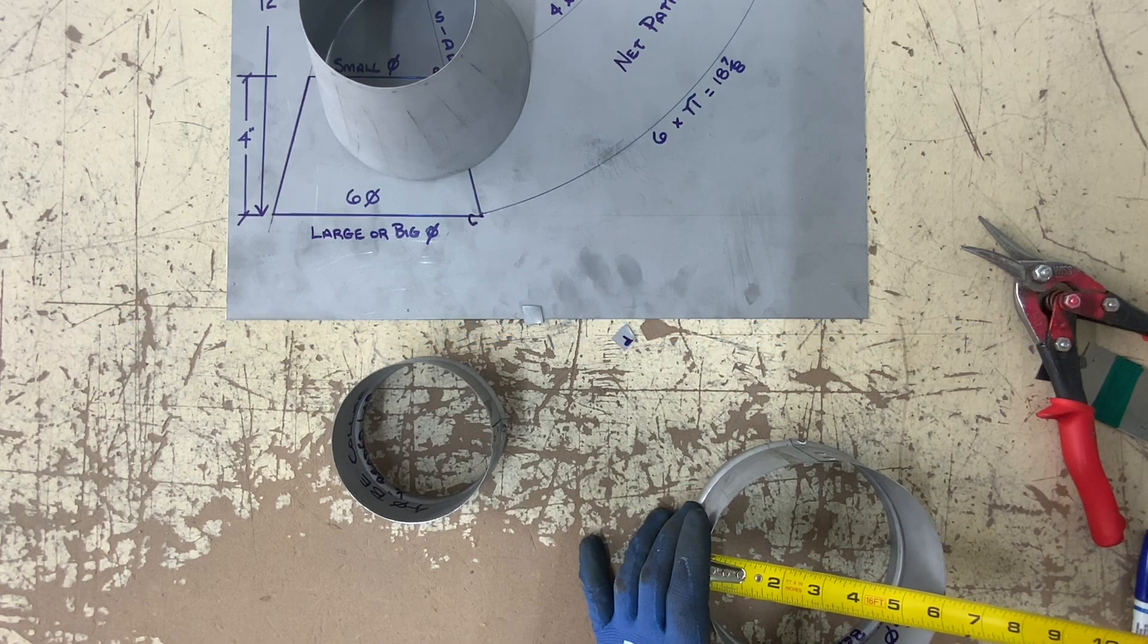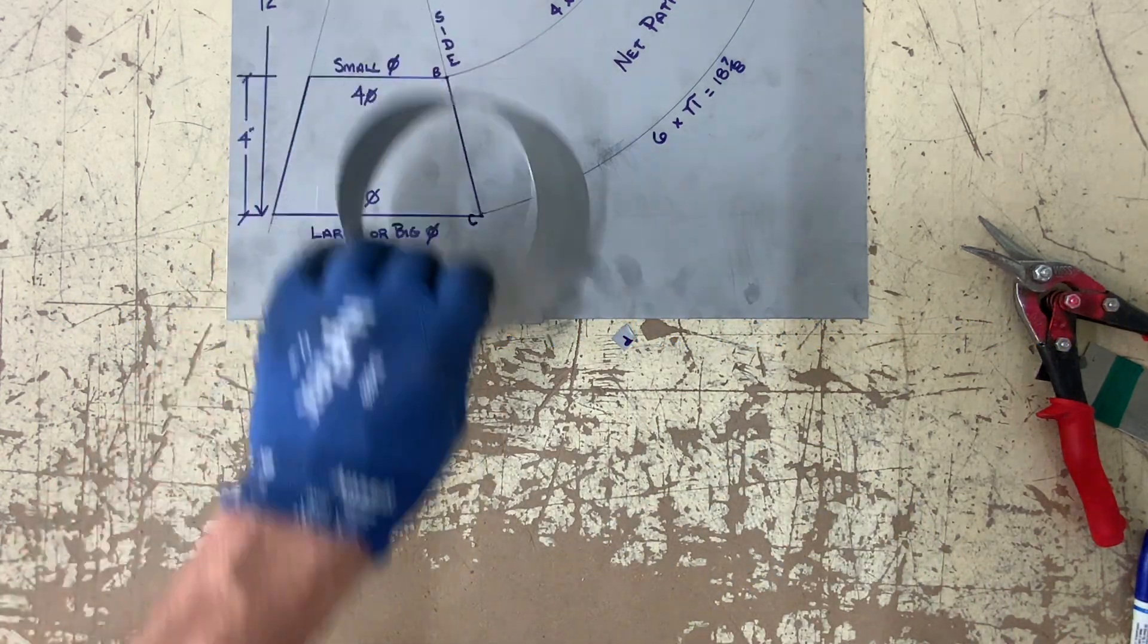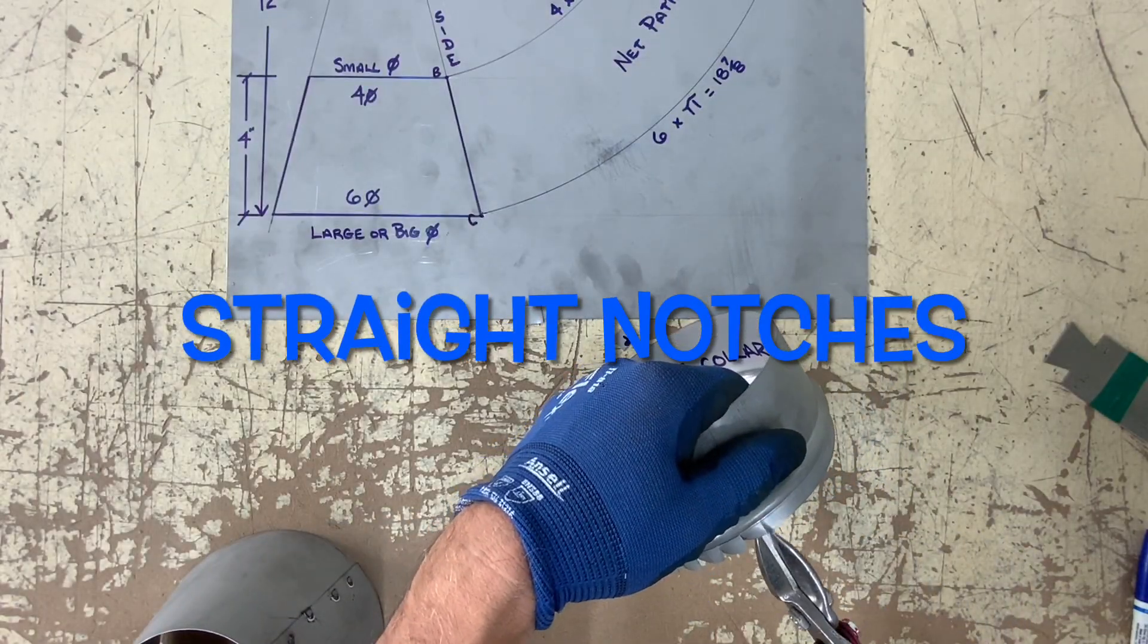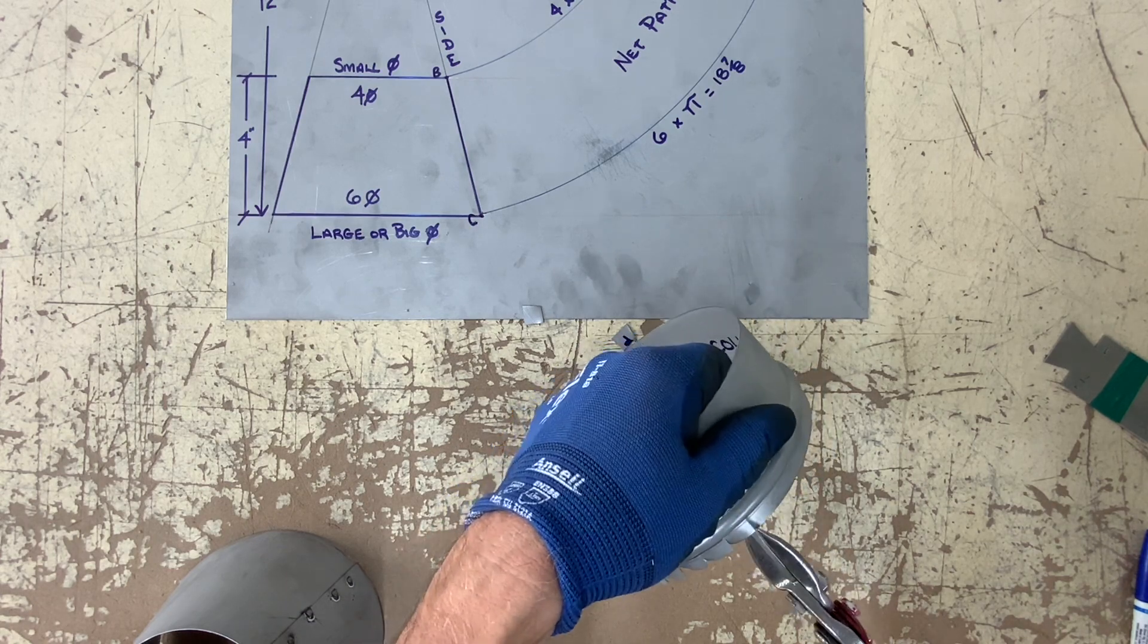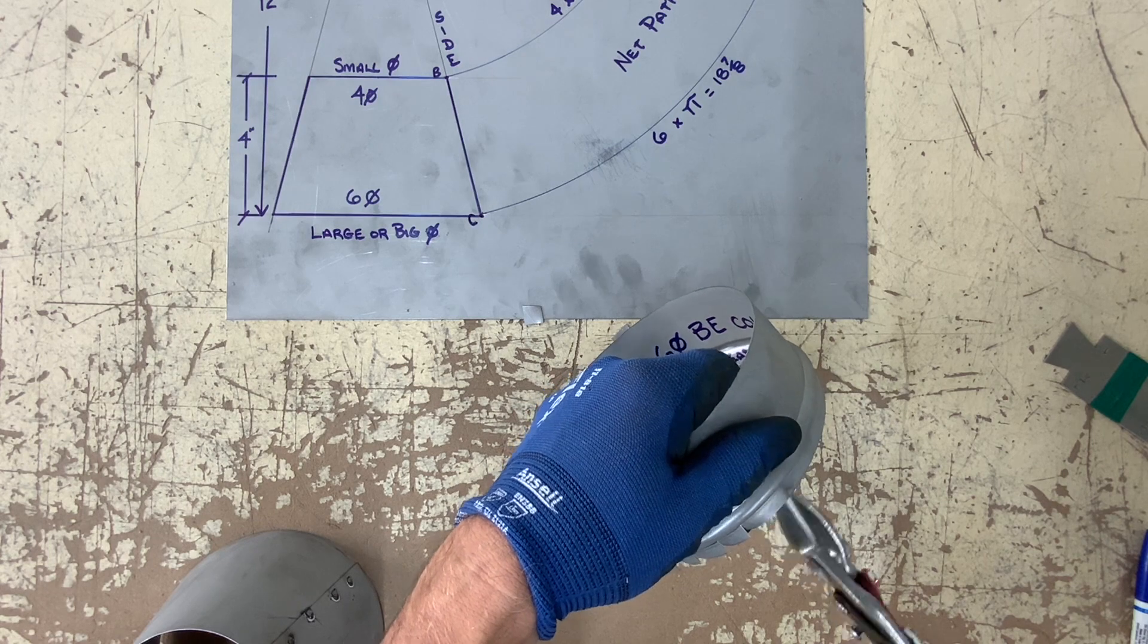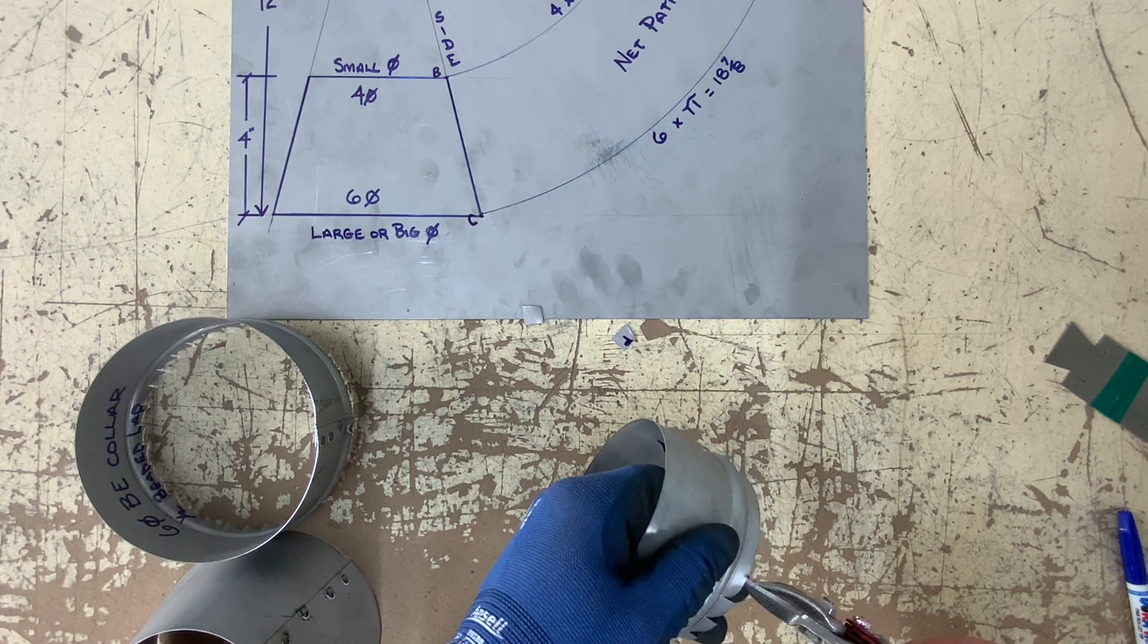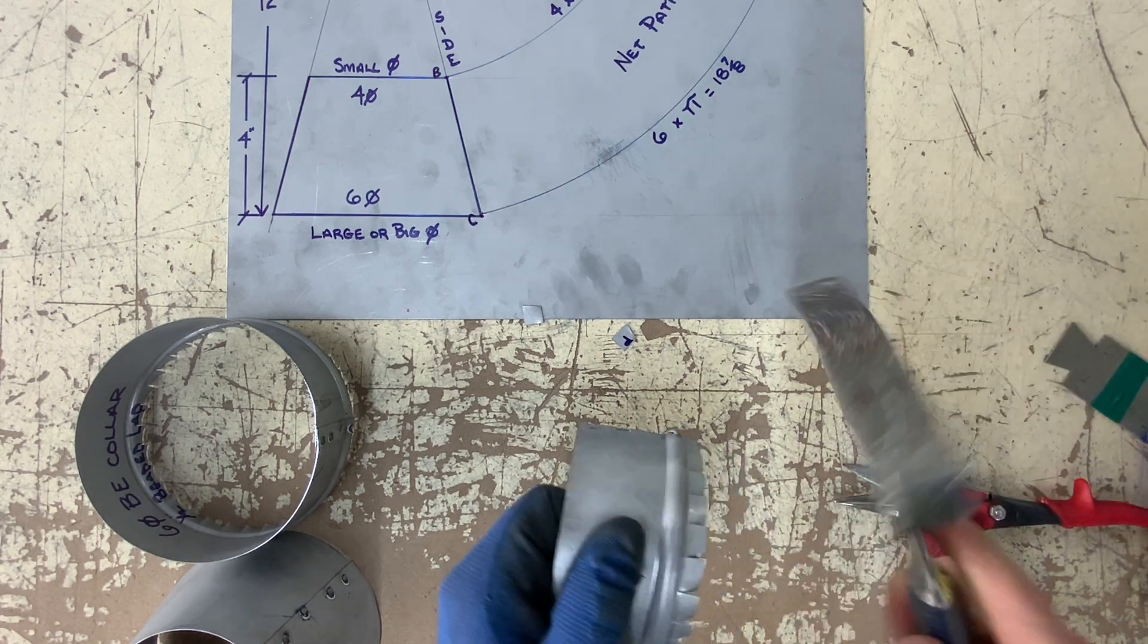Always double check your measurements before going too far. Again I have chosen a lap seam for my connector. So this type of beaded hammer lock or beaded lap seam, I am notching at approximately every half inch.